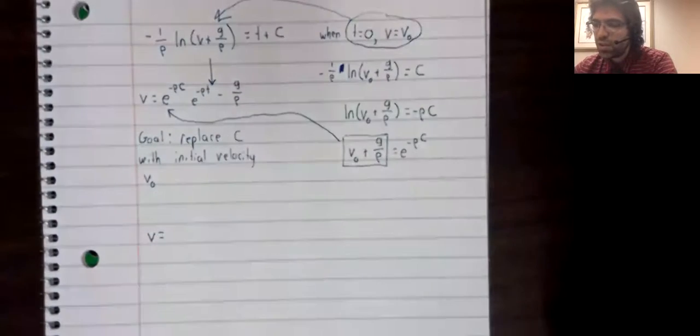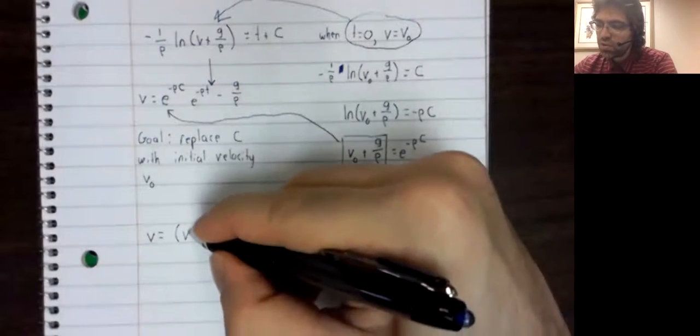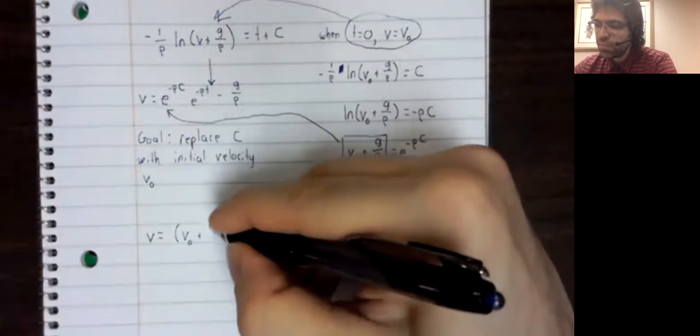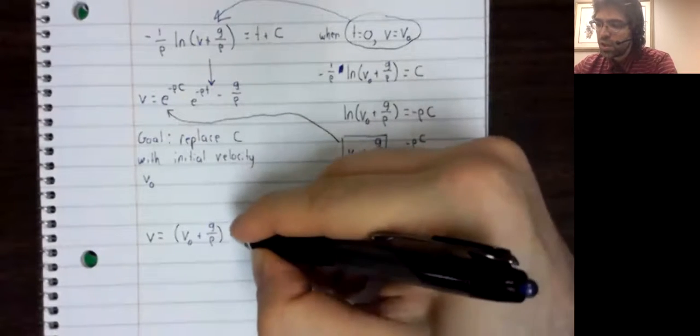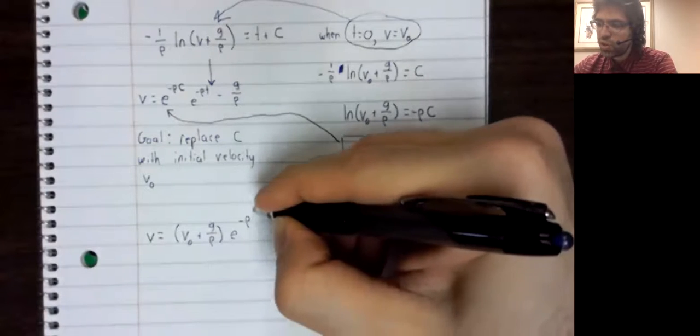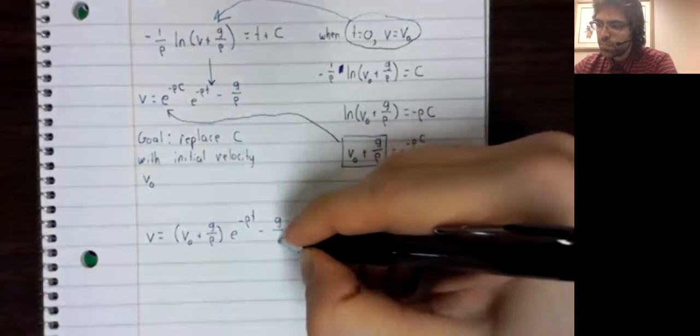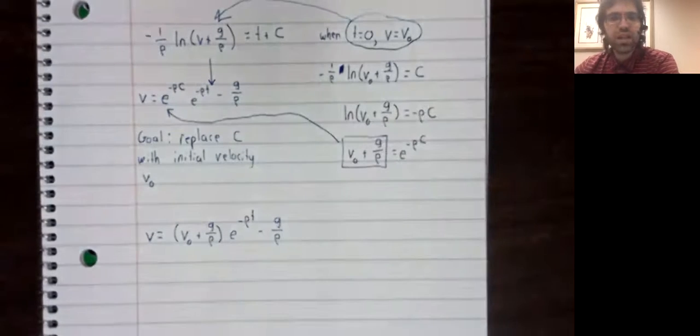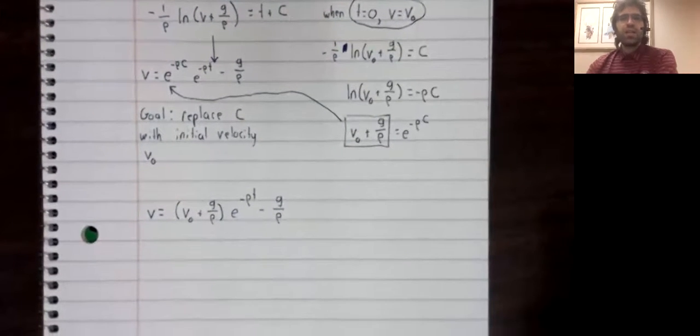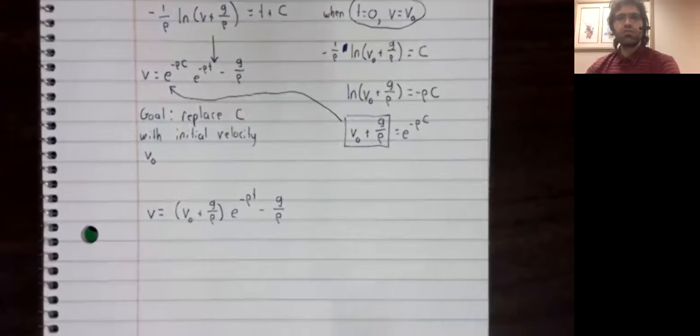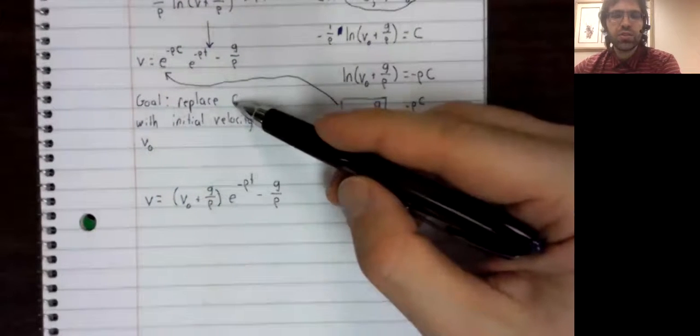And find that velocity equals this term times this exponential minus that term. And everything here has a concrete real world meaning. No more arbitrary constants.